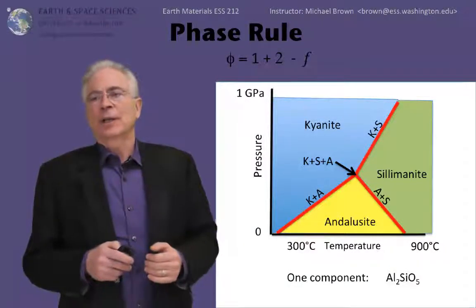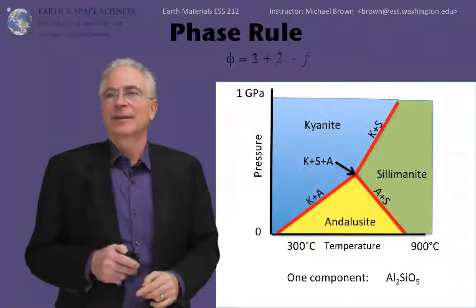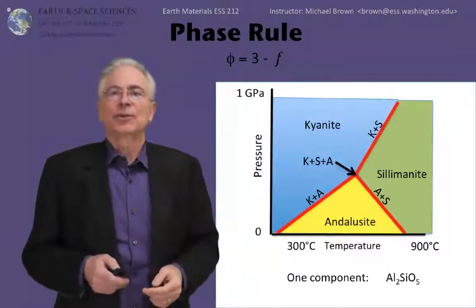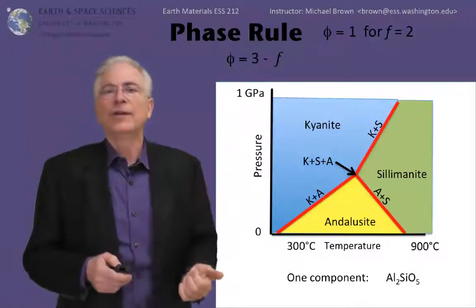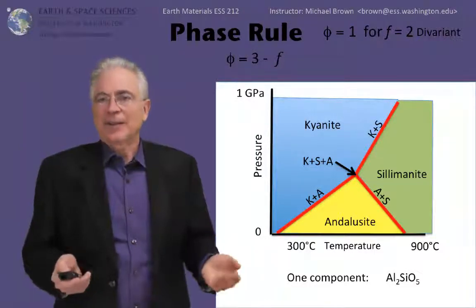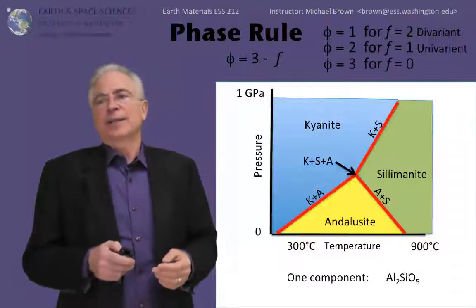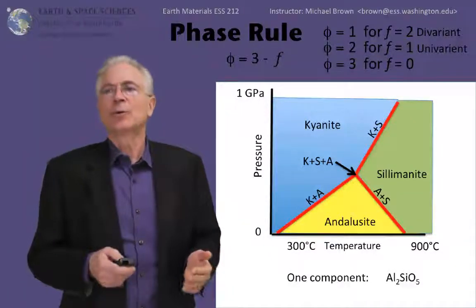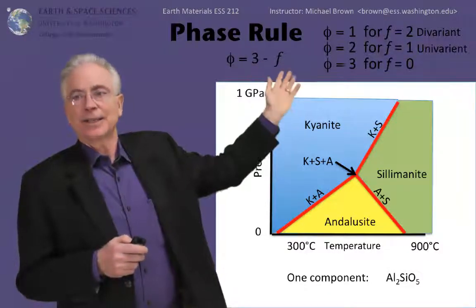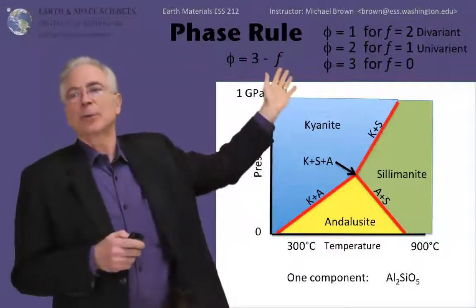So we substitute one into the phase formula and we have number of phases equal to one plus two minus F, which reduces to number of phases equal to three minus F. Now we substitute in three values of F and we can have one phase for F equals two. That's the divariant field. We can have two phases if F is equal to one. That's the univariant range. And three phases if F equals zero. We can see those three examples on our phase diagram. Kyanite in the large area here is a single phase that is stable and we can move around in pressure and temperature and it remains the only phase stable within the blue range.